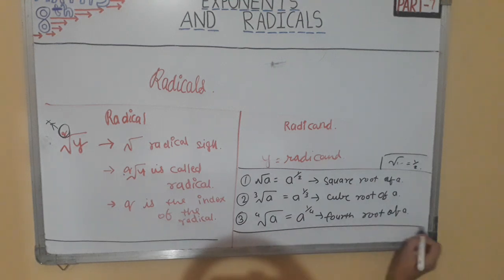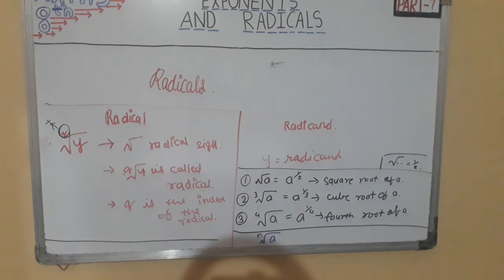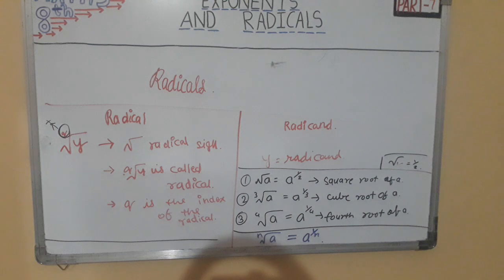So the main formula is: if a is any radicand and n is any index, then n-root of a is always equal to a raised to 1 by n. I hope you have understood this. Note that to remove a radical of the nth root, we raise the number to the power 1 by n.